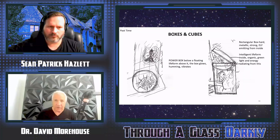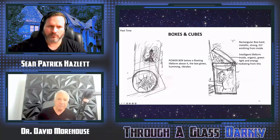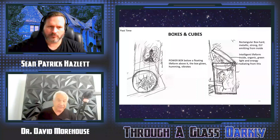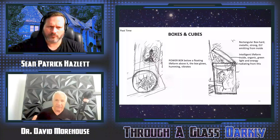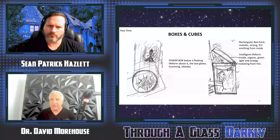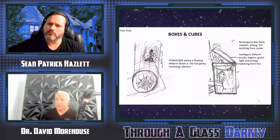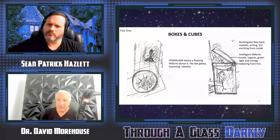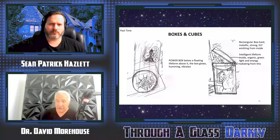Here's another viewer with a different portrayal — the box has an energy vortex going up out of it, and a life form hovering above it. The box glows, hums, and vibrates. To the right, another rectangular box is shown with a strong ELF emitting from inside, with an intelligent life form inside and organic green light and energy radiating from it.